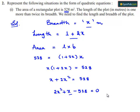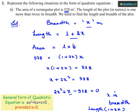Where x is breadth and the length is 1 plus 2x. So the final quadratic equation is 2x squared plus x minus 528 equals 0.